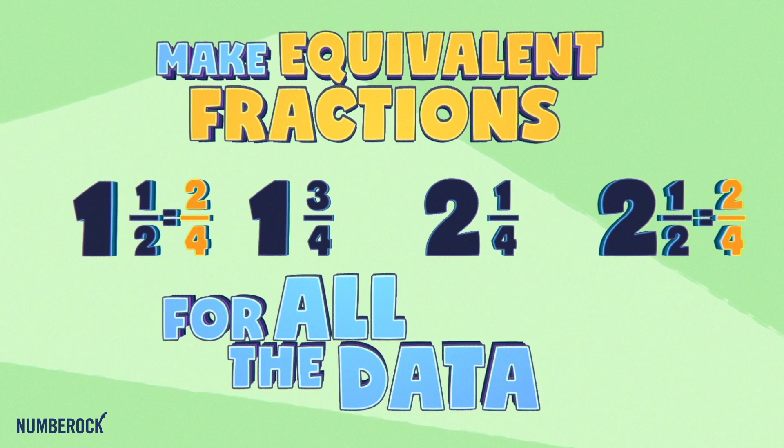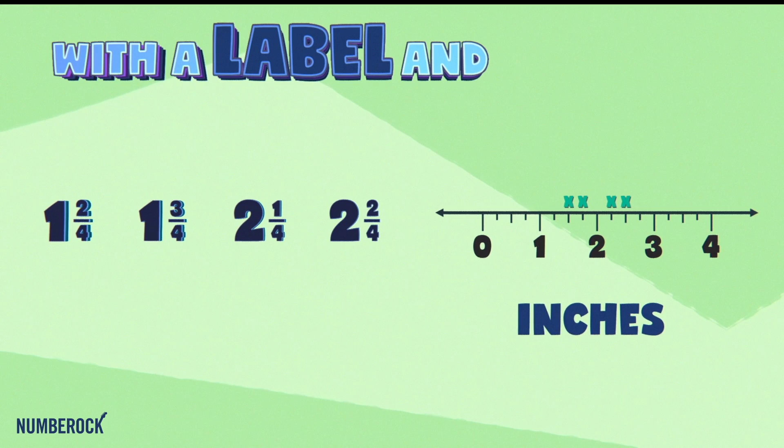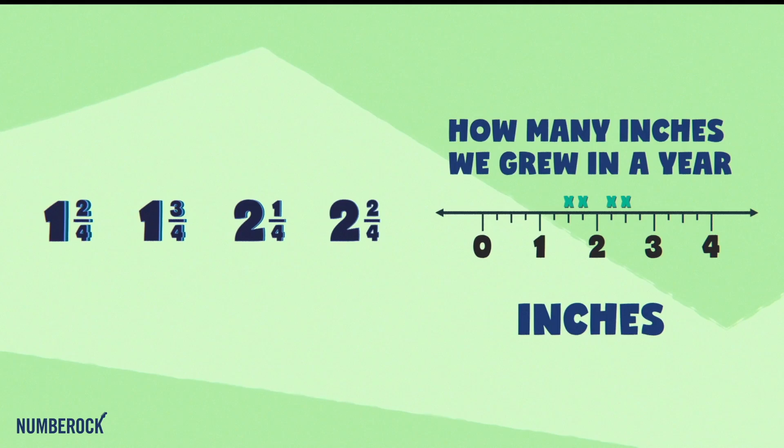First, find a common denominator. Make equivalent fractions for all the data. You can block what you got on the nine clock, with a label and the title at the top.